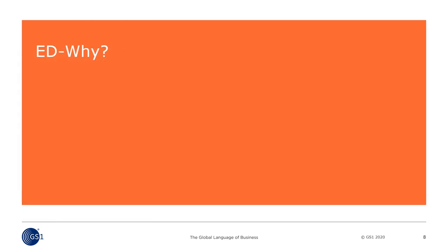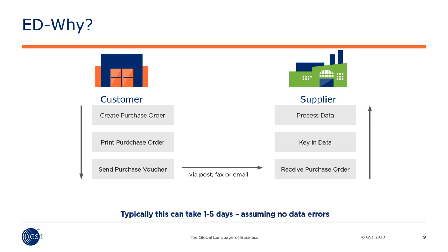So, why EDI? In the perfect scenario for a manual process, an order from customer to supplier could take one to five days. The issue is that there are many steps that can fail — no receipt of the received order, orders lost in transit, keying errors, or unintelligible handwriting. And even if you have 20-20 vision, you probably missed a keying error on this slide — see if you can find it.